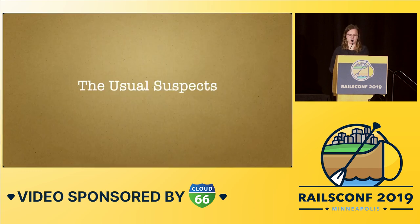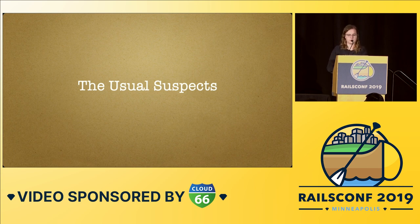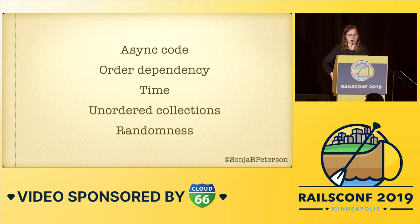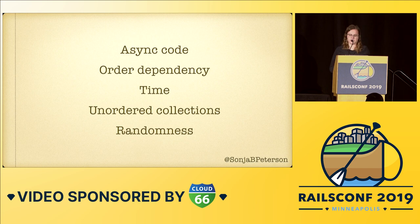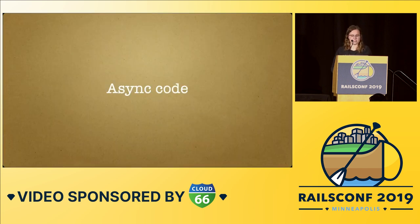Now that we have our evidence, we can start looking for suspects. With flaky tests, there's basically always the same set of usual suspects to start with, and then you narrow down from there. Those suspects are: async code, order dependency, time, unordered collections, and randomness. I'm going to go through each one by one, talk through an example or two, how you might identify that a test fits into that category, and how you would go about fixing it.